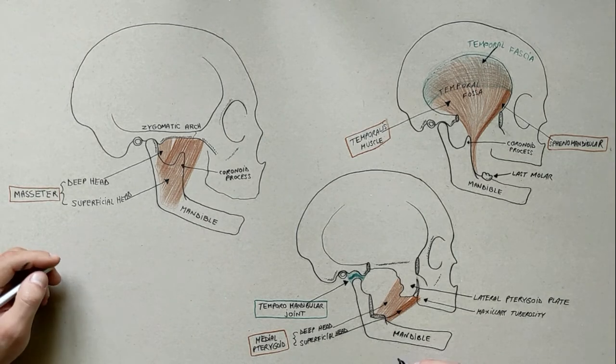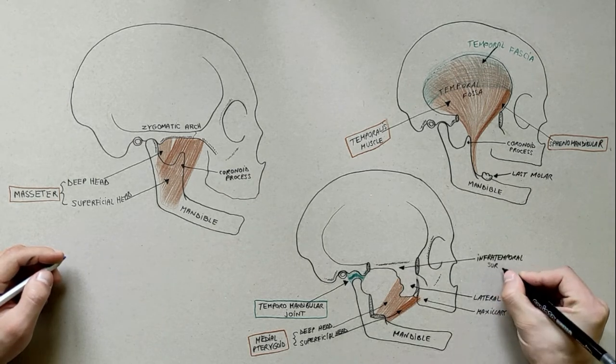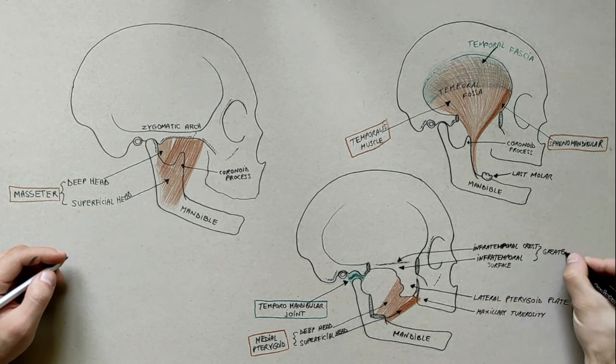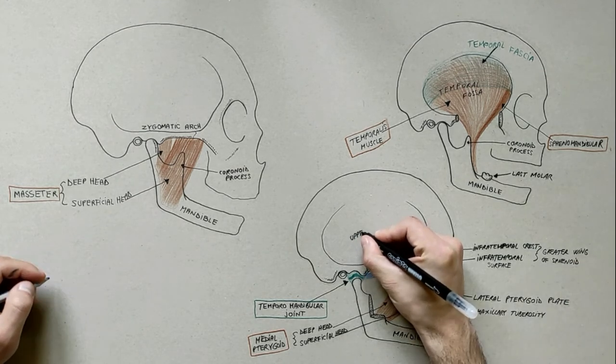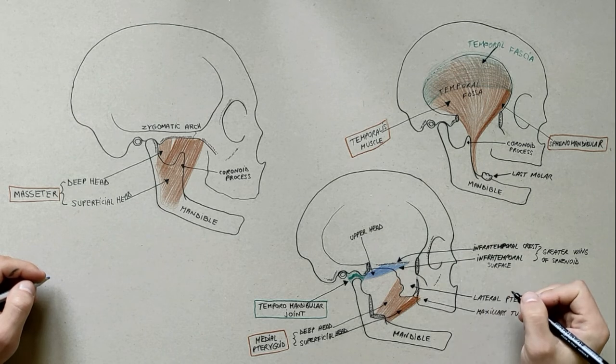The last muscle to be indicated is the lateral pterygoid muscle. This muscle also has two heads. The upper head arises from the infratemporal surface and crest of the greater wing of the sphenoid bone and inserts onto the articular disc and fibrous capsule of the temporomandibular joint.